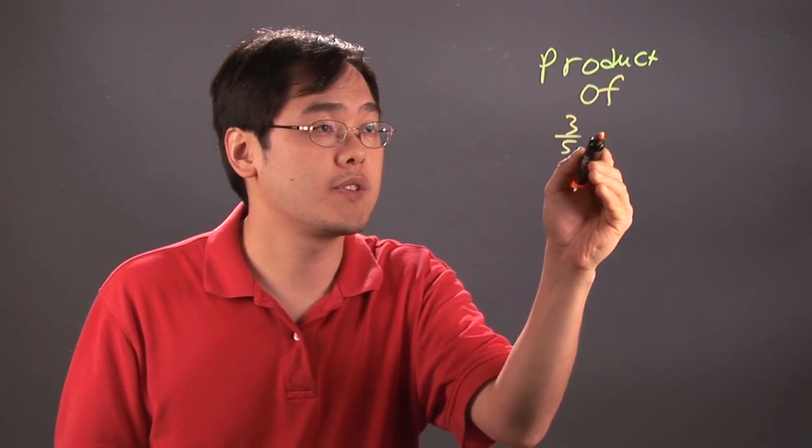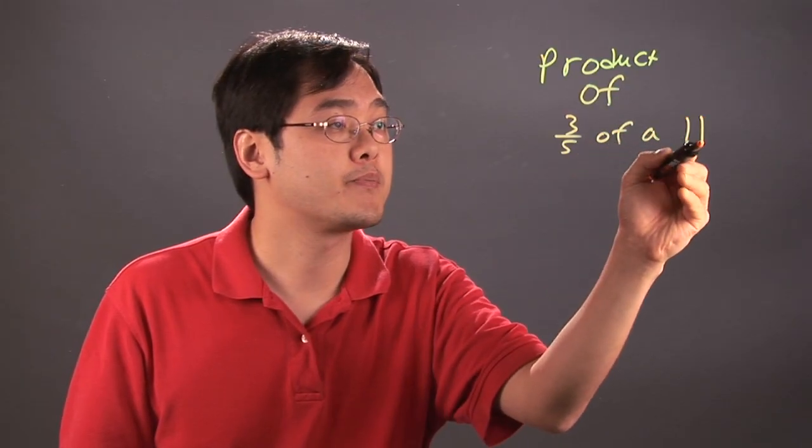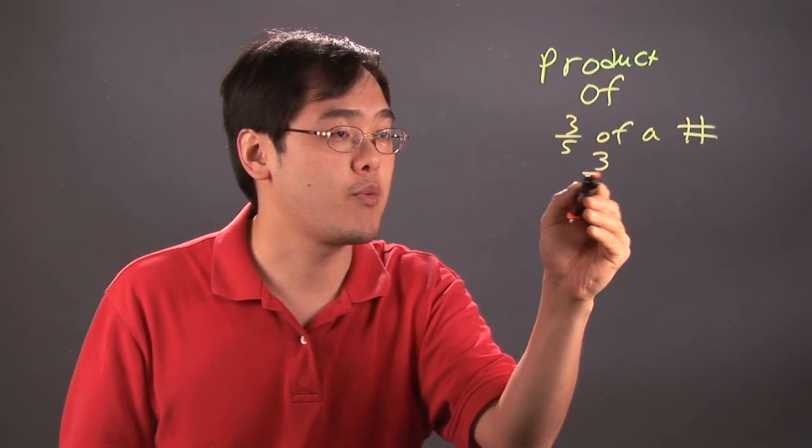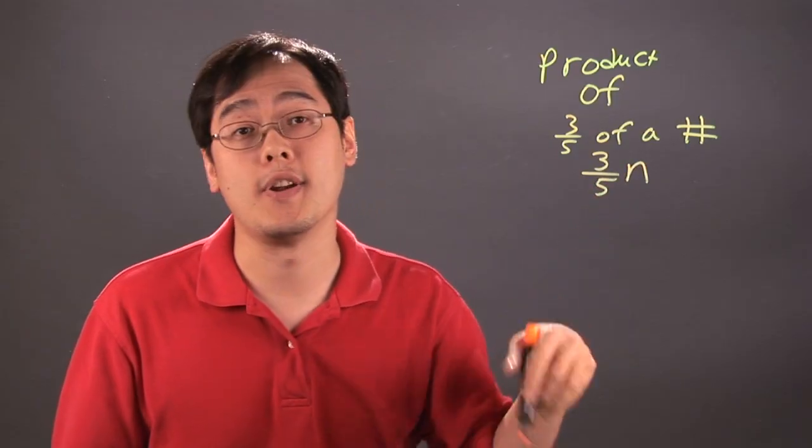For example, three-fifths of a number means that you're multiplying three-fifths by that number. Let's just call it n for number.